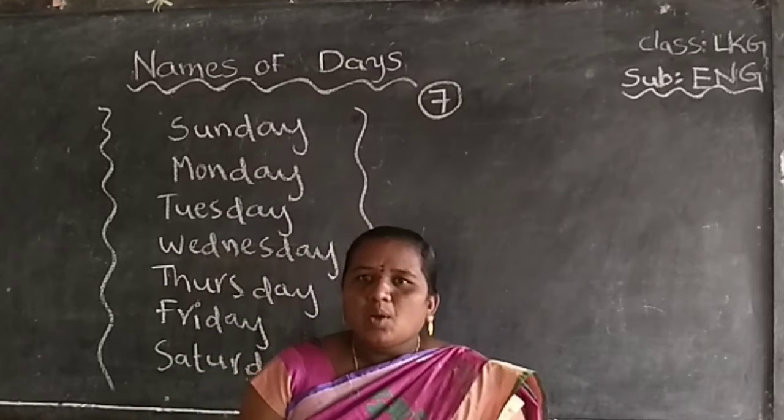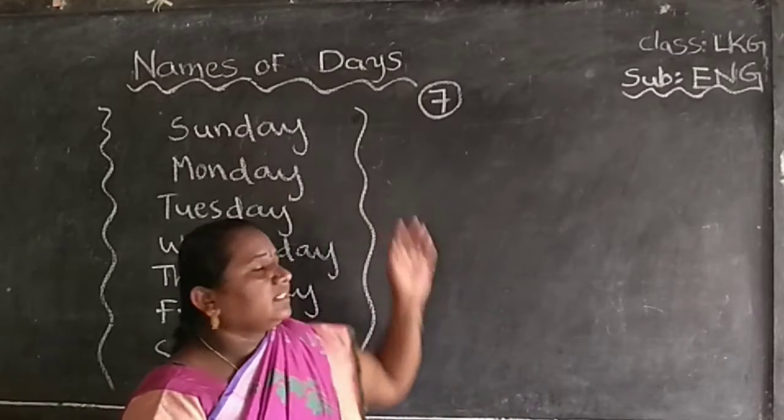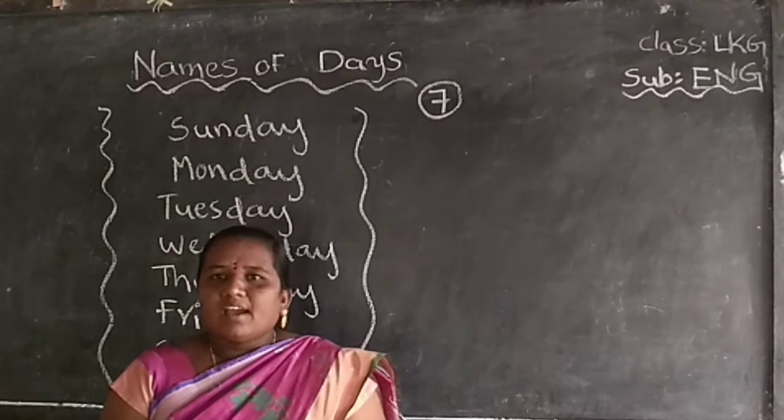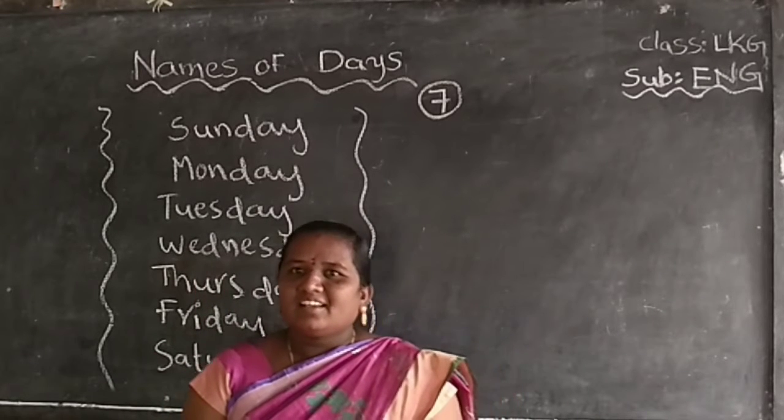How many days in a week? There are 7 days in a week. What are they?